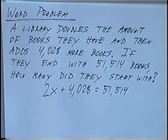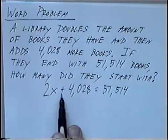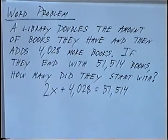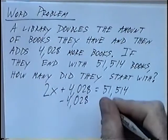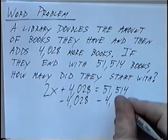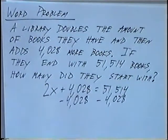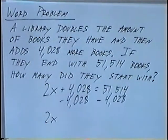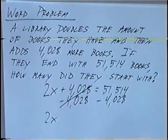Solving this, we can find out what x is or how many books they started with. Again, we want to get x by itself. So the first step, adding 4,028, we can cancel that by subtracting 4,028 from both sides. The 2x would stay the same. And the adding 4,028 minus 4,028 would cancel.